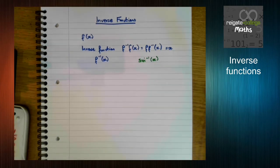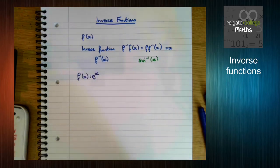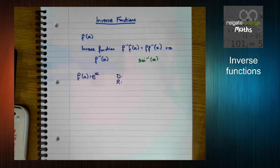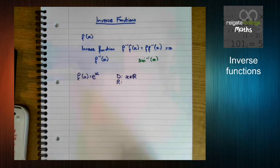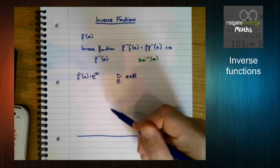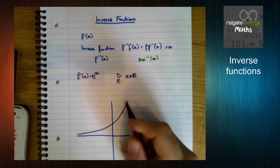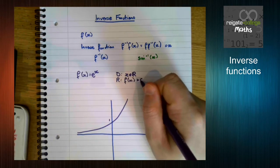Let's look at these a little bit in practice. Let's start by thinking about the function y equals e to the x, or f of x equals e to the x. Hopefully you can already spot what the inverse function will be, but let's talk about the range and domain of e to the x. The domain is x is any real number. Let's draw the graph of y equals e to the x — it looks something like that, going through 1. So we can see the range is f of x is greater than 0.